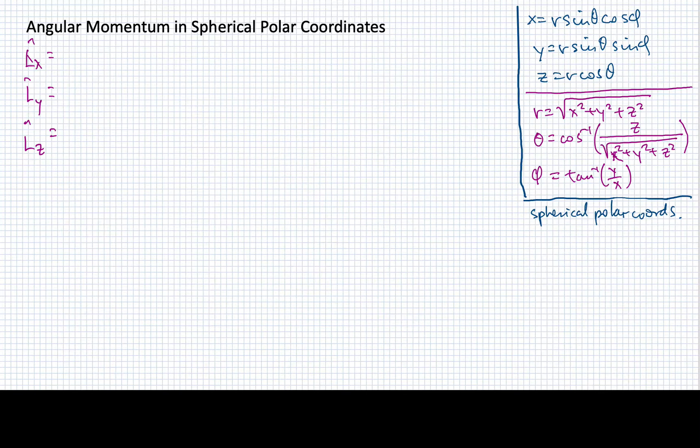Now I'll remind you that when we write them in terms of the Cartesian coordinates, they look as follows. Lx is minus i h-bar times the quantity y d/dz minus z d/dy.